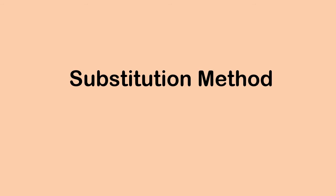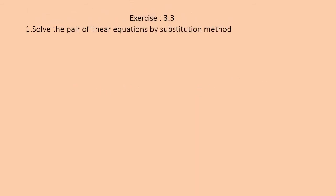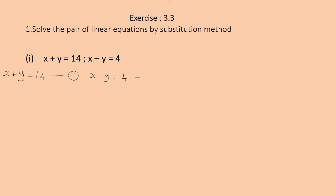You can make it more clear by doing the sum. Moving to Exercise 3.3, Question 1: solve the pair of linear equations by substitution method. The equations are x + y = 14 and x − y = 4. First, number the equations: x + y = 14 as equation 1, and x − y = 4 as equation 2.